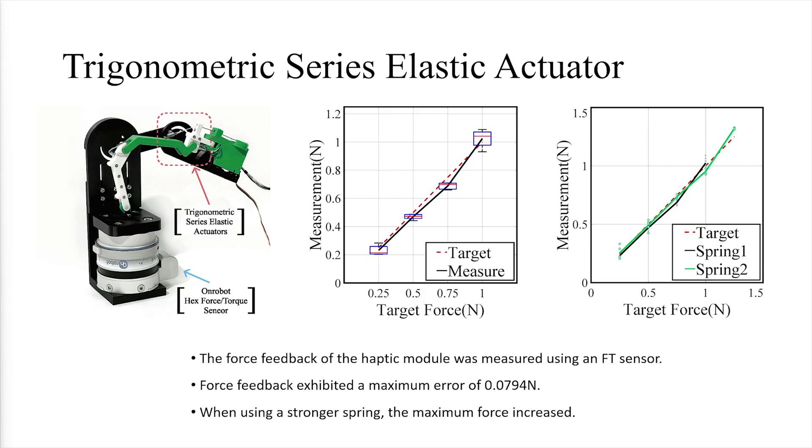Now, let's discuss the force feedback performance of the haptic module. Force feedback was measured with an FT sensor, showing a maximum error of 0.0794 Newtons, indicating high precision.